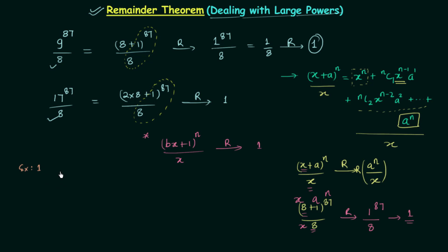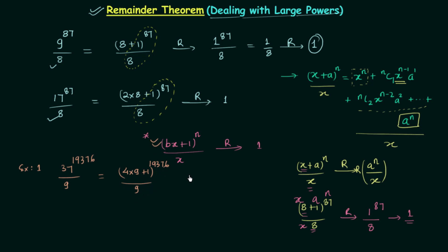In the first example, 37 raised to power 19376 is divided by 9. You have to think how to break 37 into the form bx + 1. We know 9 × 4 = 36 and 36 + 1 = 37, so we write it as 4 × 9 + 1, raised to power 19376, divided by 9. We have this form, so we can directly write down the remainder as 1.